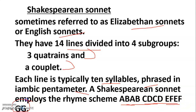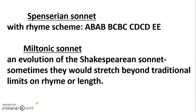The Spencerian sonnet is a variation on the Shakespearean sonnet, just as the Shakespearean sonnet is a variation on the Italian sonnet. It features a more challenging interlocking rhyme scheme: ABAB BCBC CDCD EE — where the ending rhyme of each quatrain links into the beginning of the next.